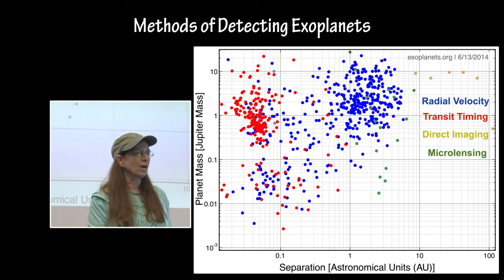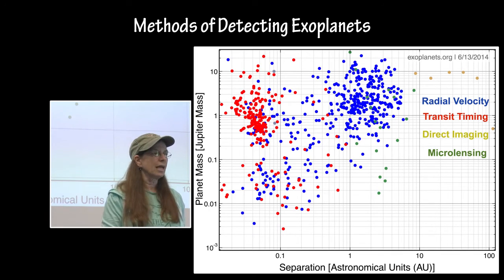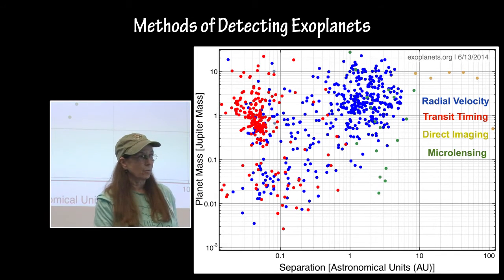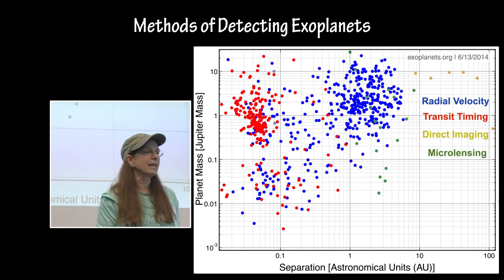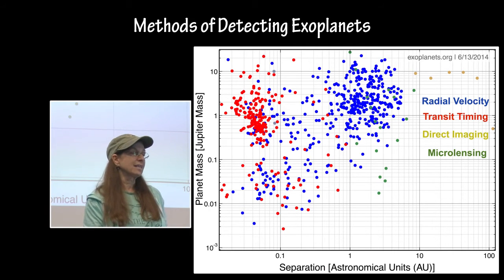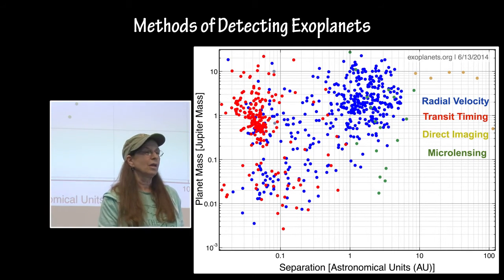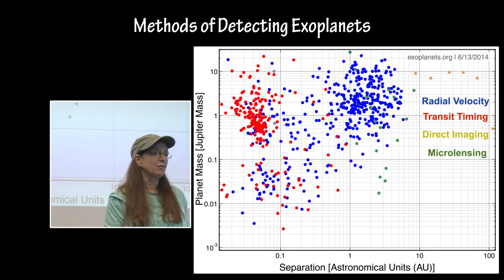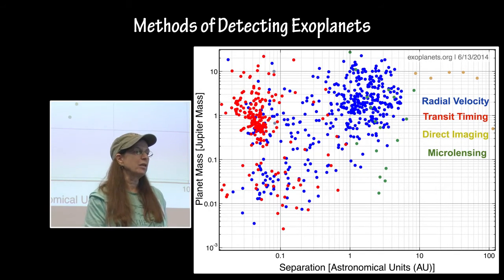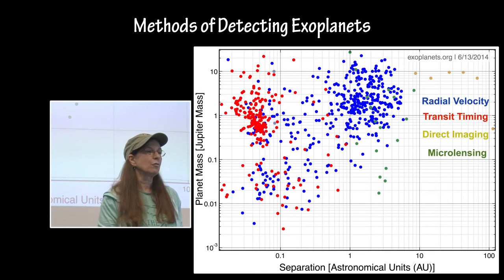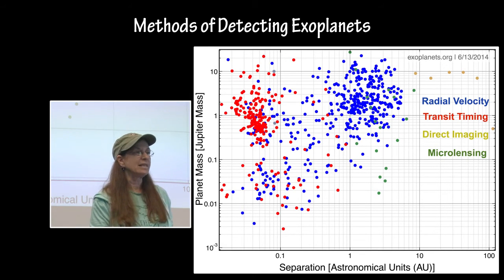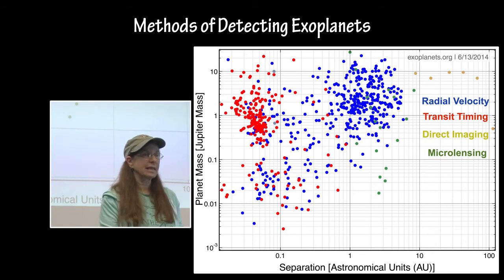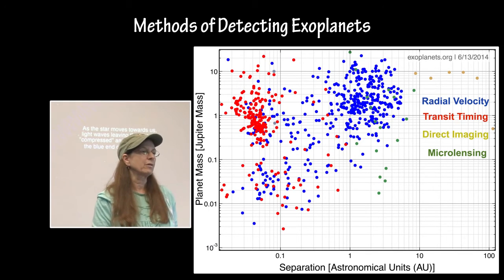This graph shows a plot of the methods of detecting exoplanets by separation in AU versus the mass of the planet. You can see that if it is less than 0.1 AU, then transit timing predominates, but if you get out to around 1, between 1 and 5 AU, then radial velocity dominates as the main way of detecting exoplanets at that distance and that mass from their parent stars.